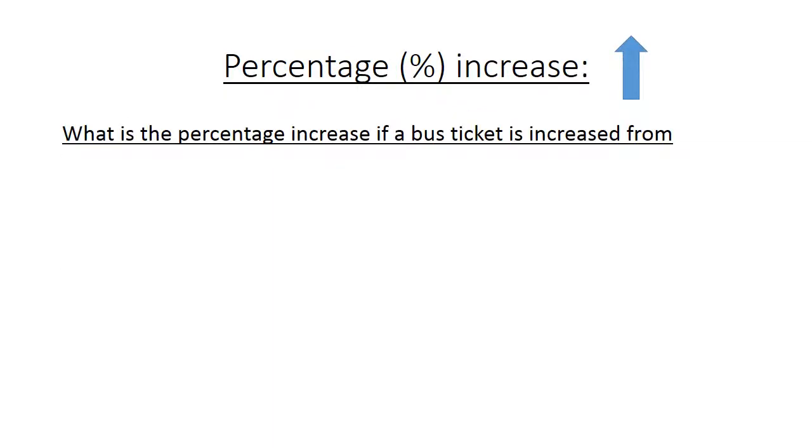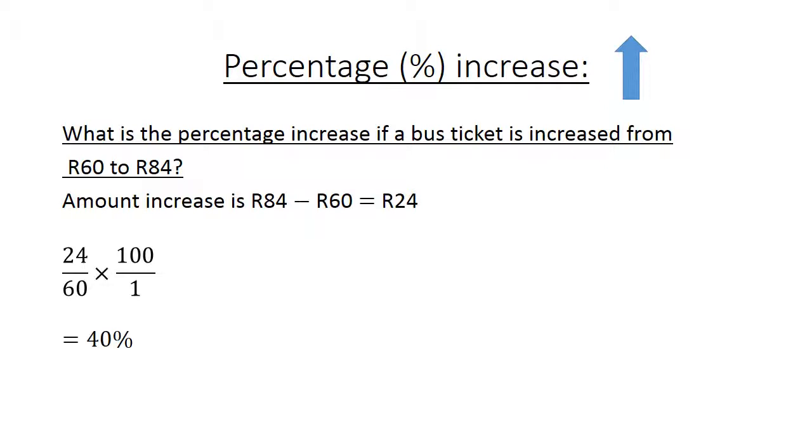Percentage increase: What is the percentage increase if a bus ticket is increased from 60 rand to 84 rand? The amount increase is 84 minus 60, which equals 24 rand. 24 over 60 times 100 equals 40%.